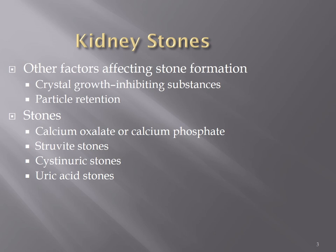Cysteine stones are related to abnormal excretion of amino acids — not only cysteine, but also lysine and arginine. These represent abnormal conditions related to excess amino acids. Prevention involves increased fluid intake and increasing the urinary pH above 7.5, creating a basic environment that is not beneficial for stone formation.